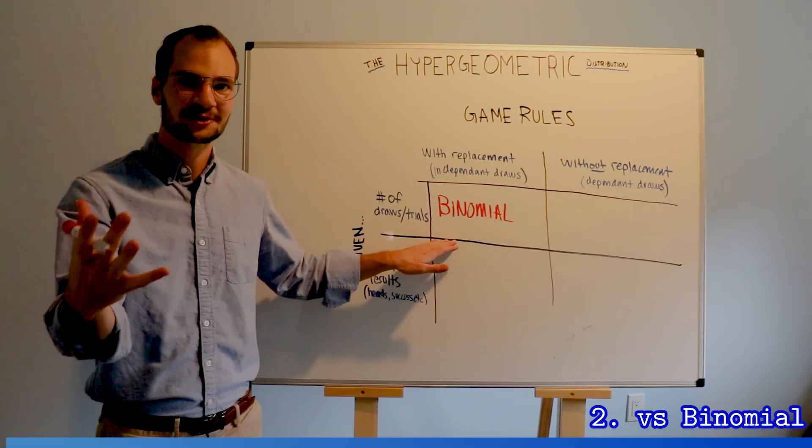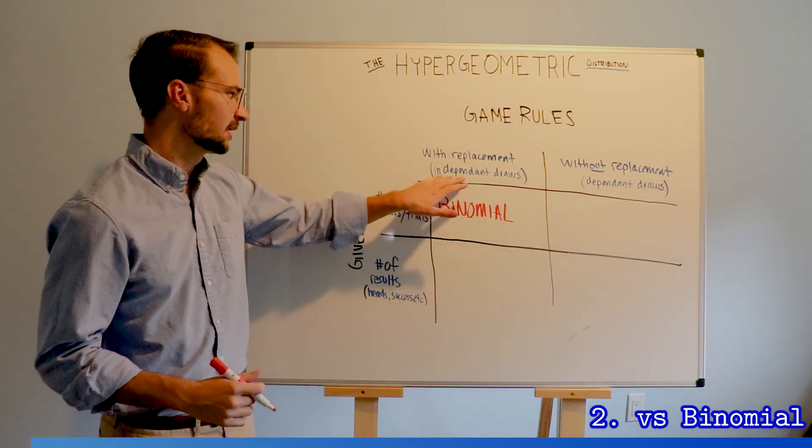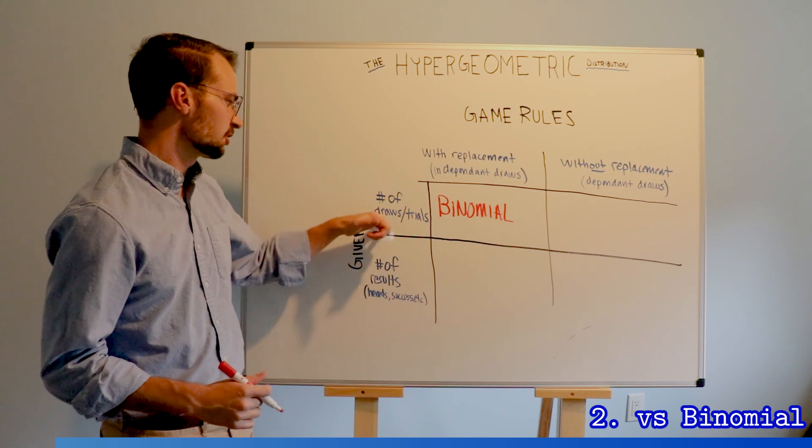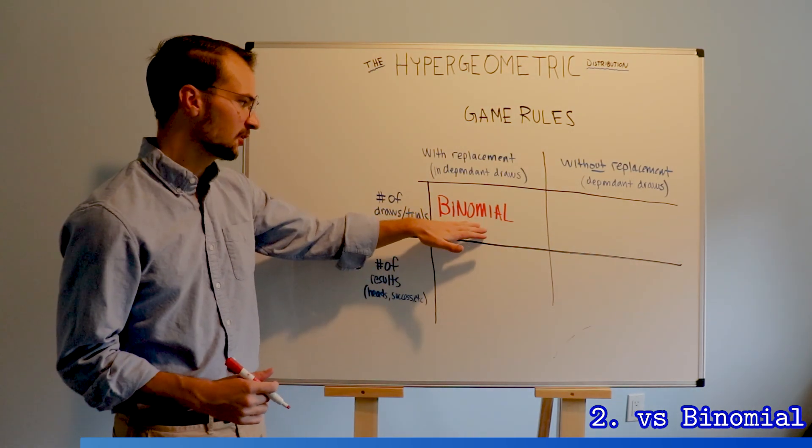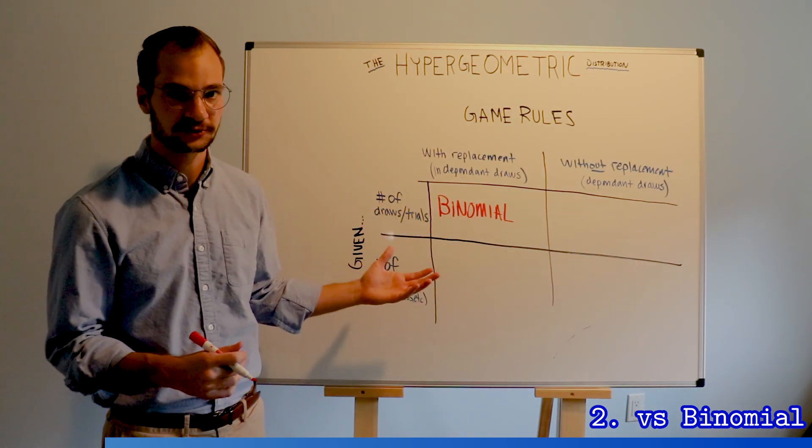The first one is our familiar binomial distribution. When there are independent draws and we're given the number of draws, the binomial tells us how many results we can expect.